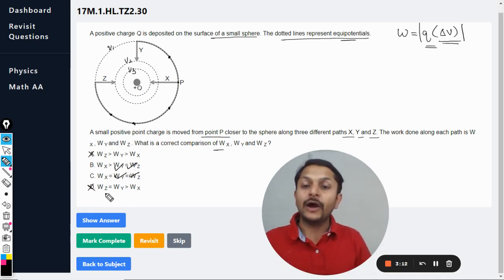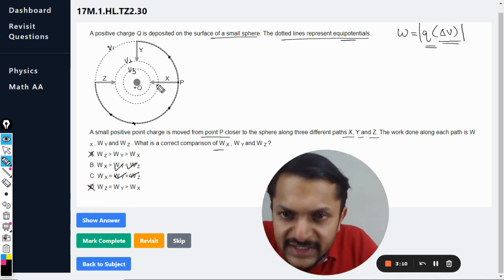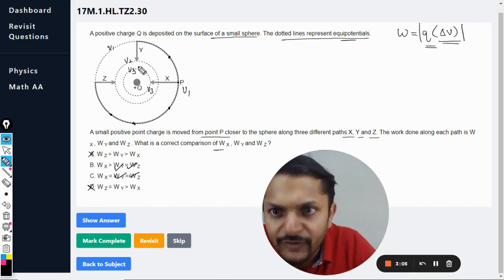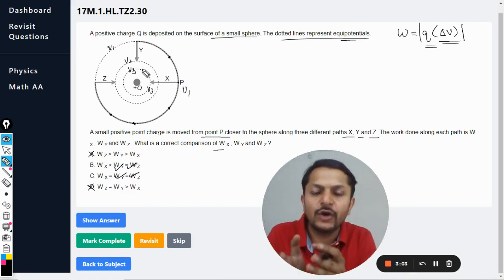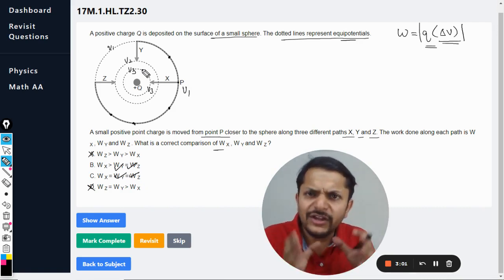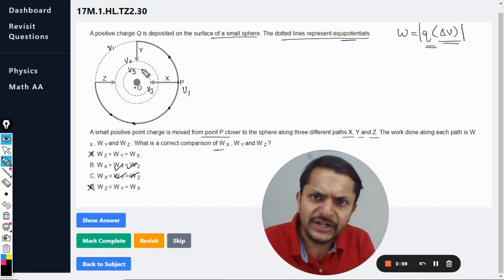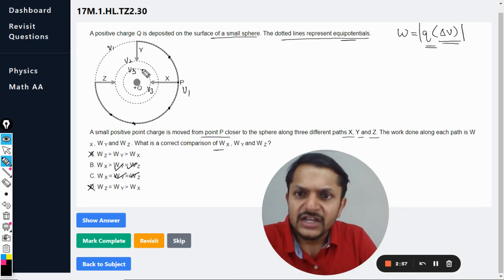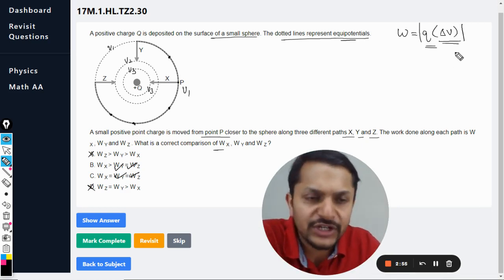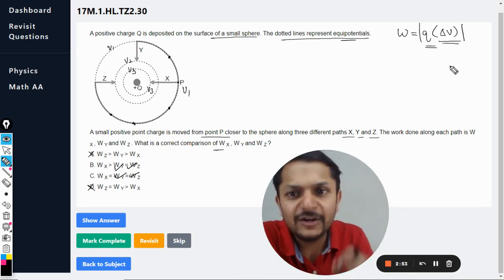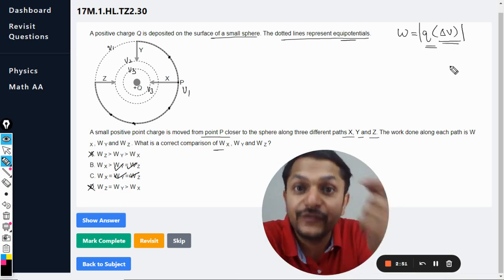So let's talk about X now. Clearly, X is moving from V1 to V3, and Y is moving from V1 to V2. So there is a difference in the electric potential changes. For X, the potential change is more, and thereby we come to the conclusion that the work done in the case of X will be more than that in the case of Y.